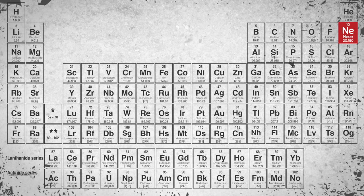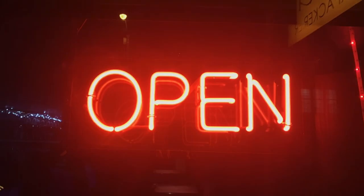For example, neon, element number 10, is known to glow red. That's how we make neon signs. You stick neon atoms in a glass tube, add electricity for energy, and watch those suckers glow.